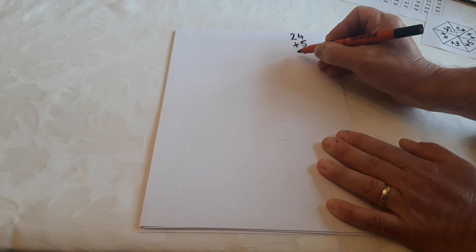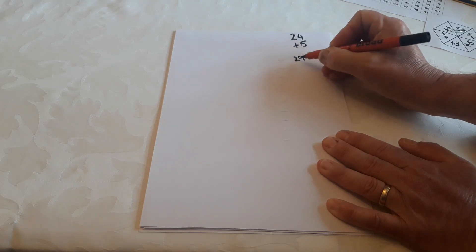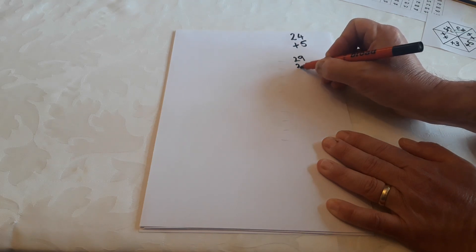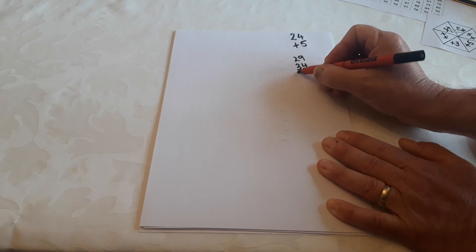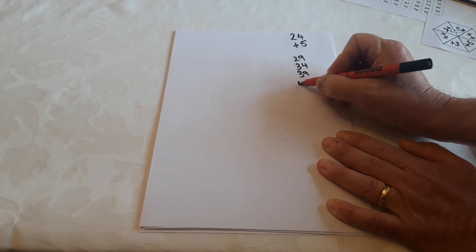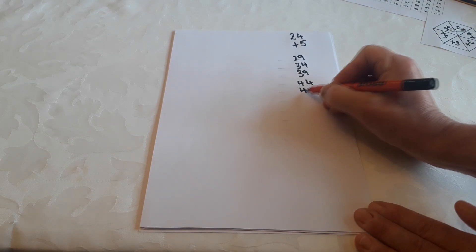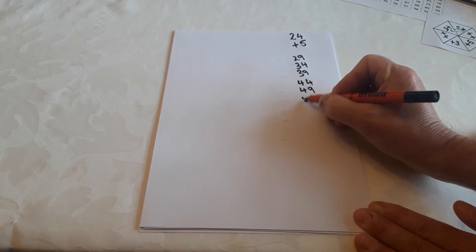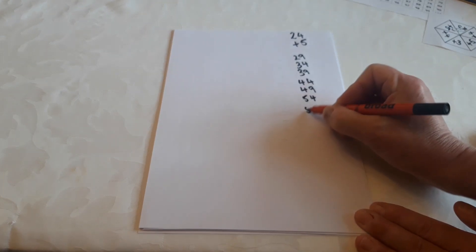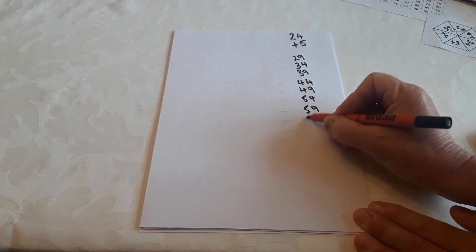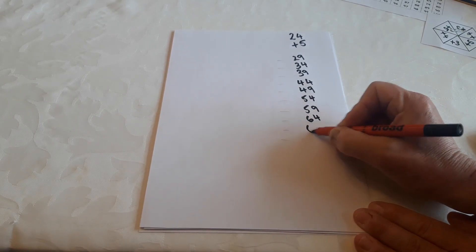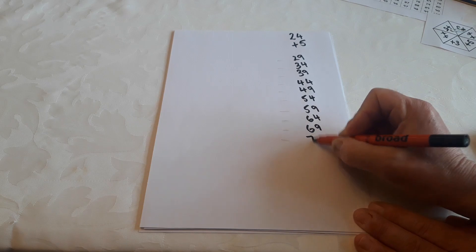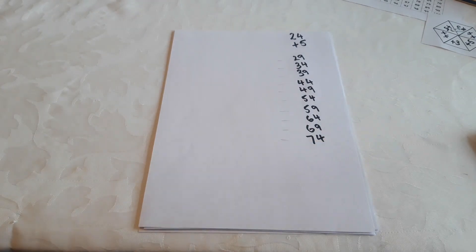24 add 5 is 29. 29 add 5 is 34, 39, 44, 49, 54, 59, 64, 69, 74. Stop.